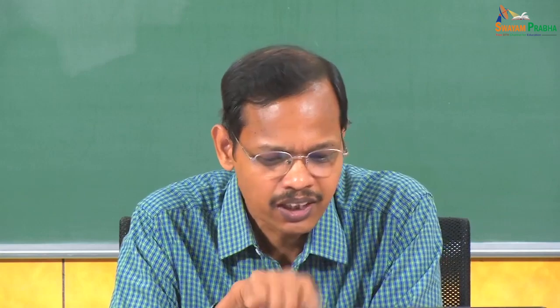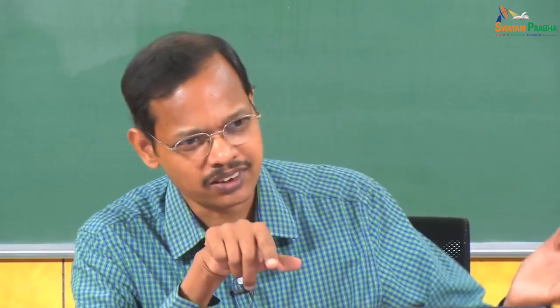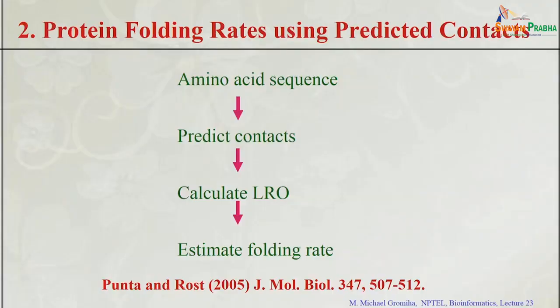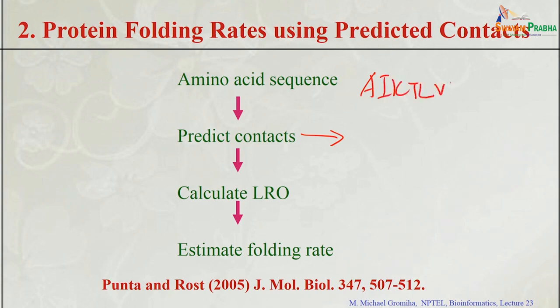For a second approach to predict folding rate from sequence: an indirect method using contacts was developed by Burkhard Rose from Columbia University in 2005. Since topological parameters explain folding rates well and depend on contacts, if we can get contacts from sequence, we can convert them into folding rates. The procedure: first get the sequence, then predict contacts from that sequence.